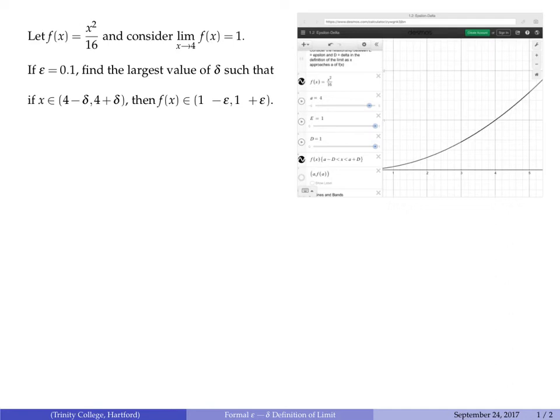Hi everyone. In this video we're going to answer a specific question that relates to the epsilon-delta definition of limit. Given this function f(x) = x²/16, whose graph we have pictured here, we're going to consider the limit as x approaches 4 of f(x). It should be clear from the graph that the limit is 1, but we want to see how this relates to the epsilon-delta definition.